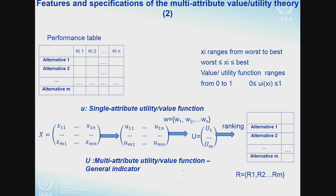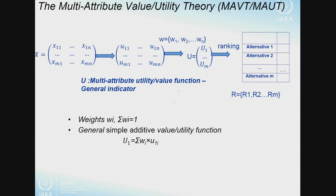How can we convert individual utilities into one combined value? We need another parameter: weight. If we assign some weight to each indicator, we can obtain this one multi-attribute value. You need to multiply each utility value by its corresponding weight and sum them. Then you have this final value. In principle, this is very simple.